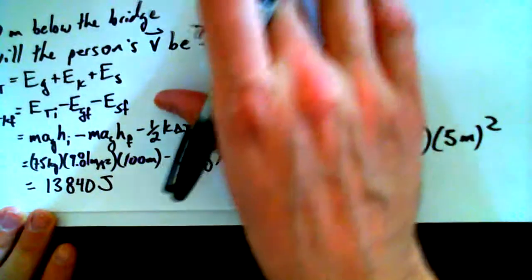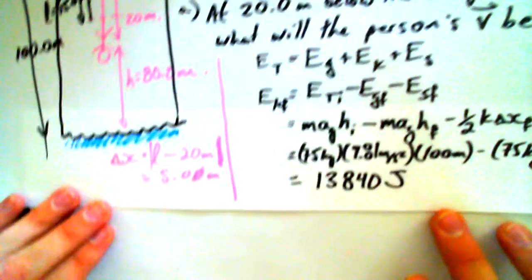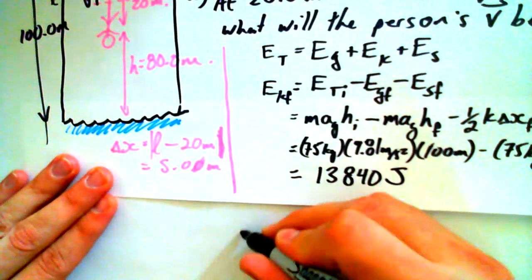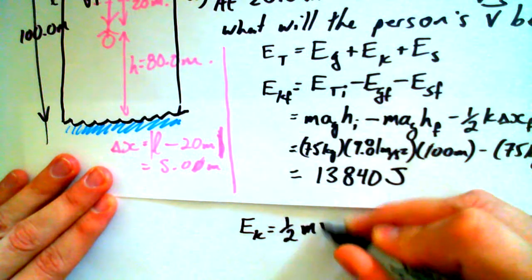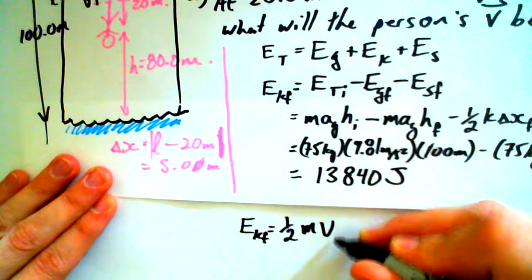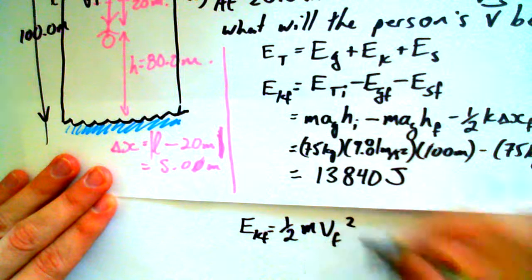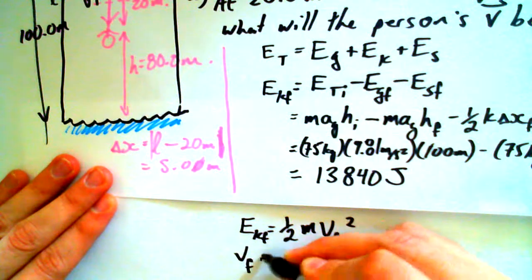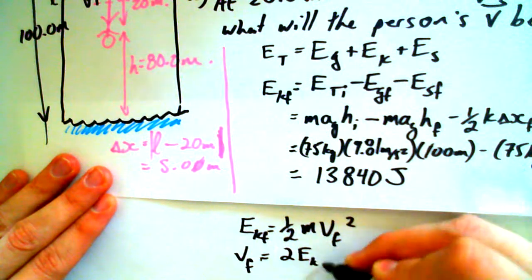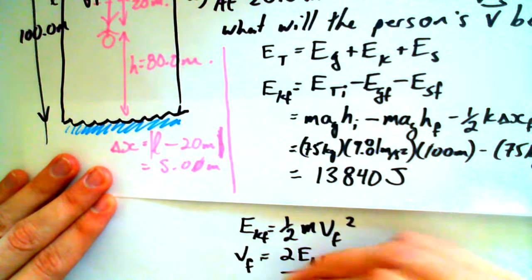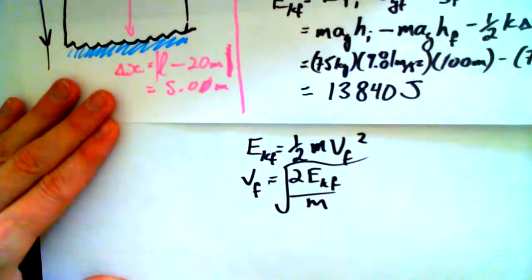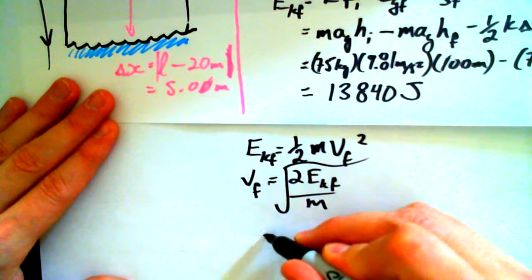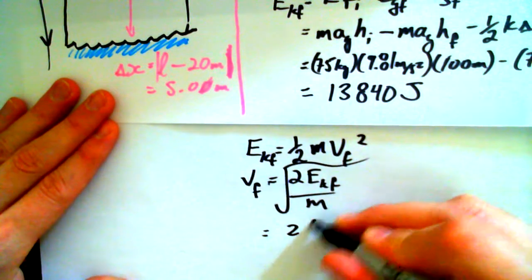So, I'd like to carry on with the next line. So, if we know that E_K is equal to one half M, or E_K final, is equal to one half M V final squared, we can get our V final all by itself. Two times E_K final divided by M all square rooted.